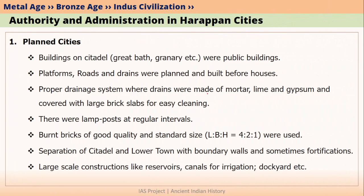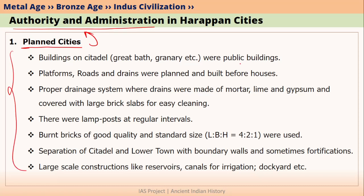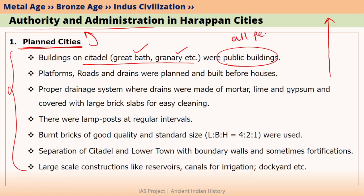Please note that we have already studied all this data in previous lectures. What we are doing now is relating the feature with the importance of authority and administration, so we won't go into all the details again. The first aspect of planned cities: we know there were public buildings like the Great Bath and Granary. Public buildings can be used by all people, which means people came together with some kind of authority so that these buildings could be built.